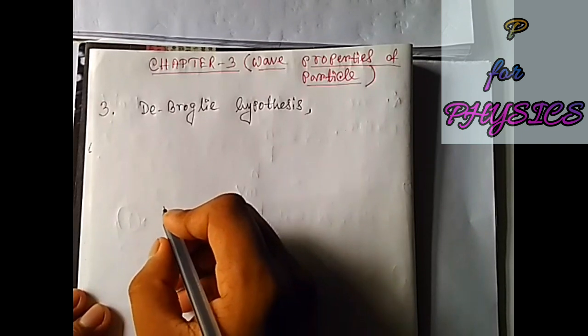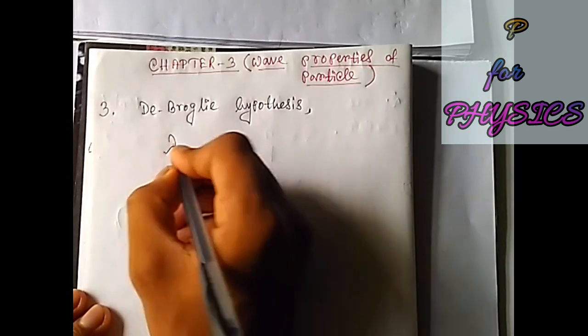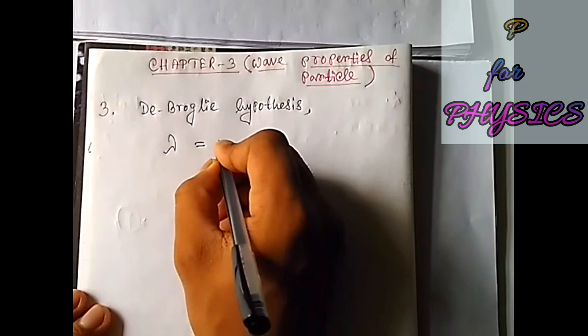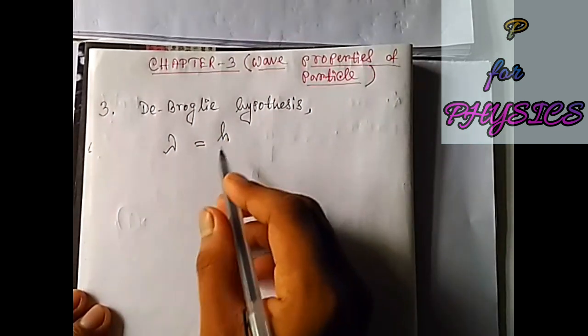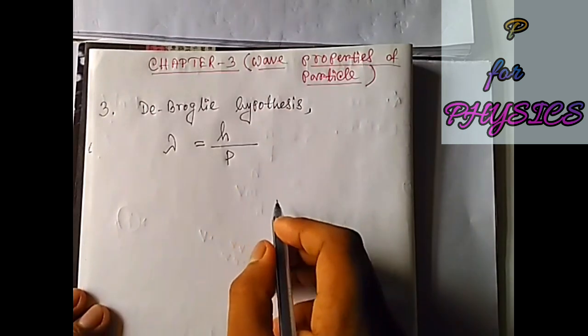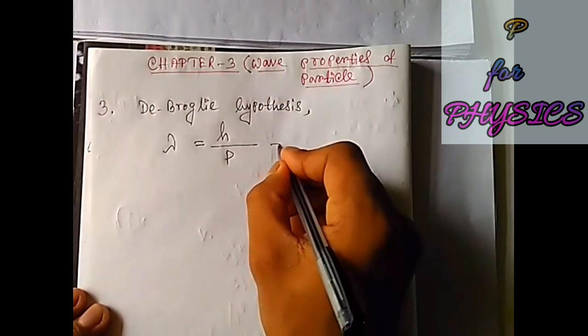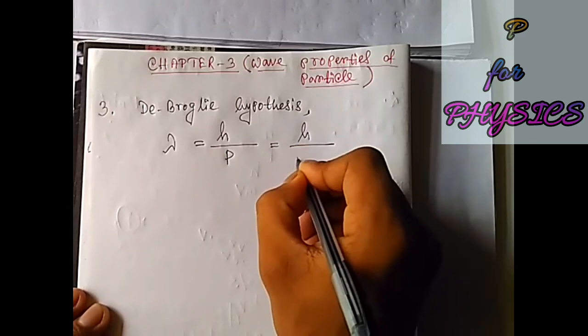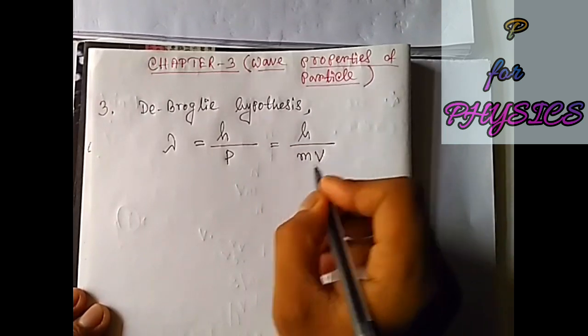The wavelength of a material particle, λ, equals h (which is Planck's constant) divided by the momentum of the material particle, which is nothing but mass times velocity.